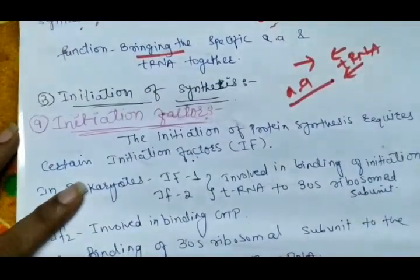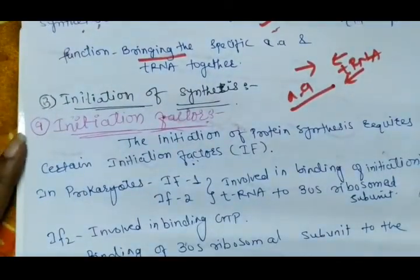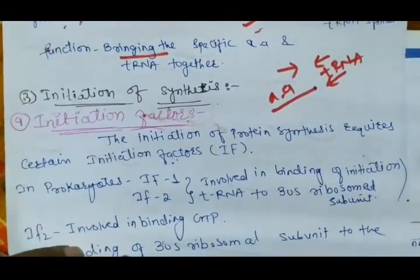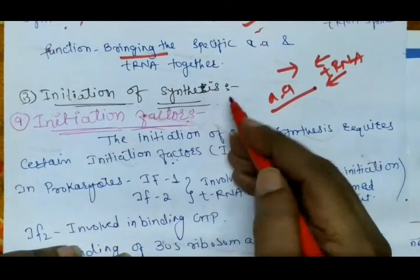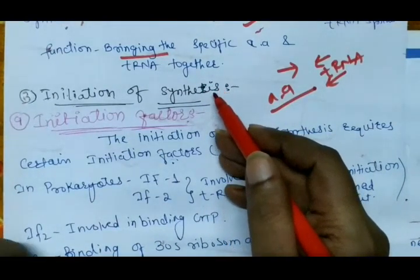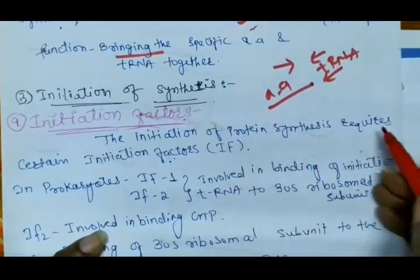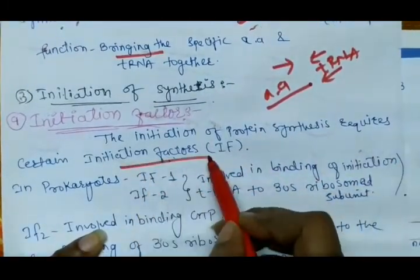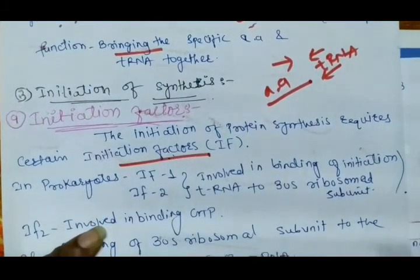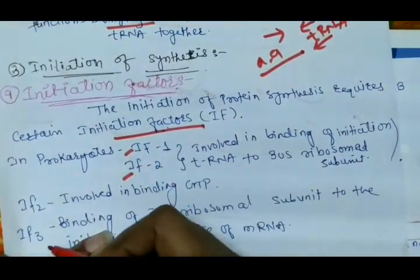The next step is the initiation of protein synthesis. For initiation, initiation factors are required. In prokaryotes, three types of initiation factors are present: IF1, IF2, and IF3.